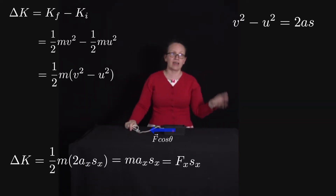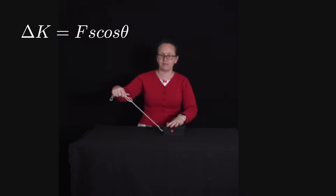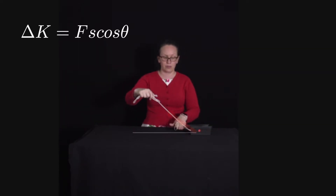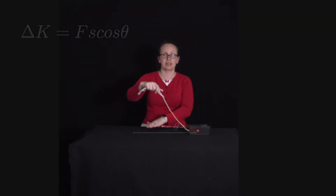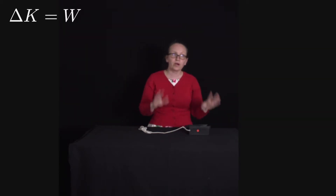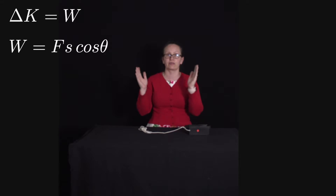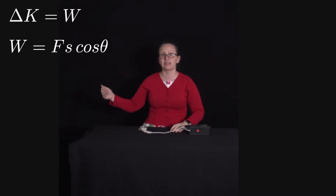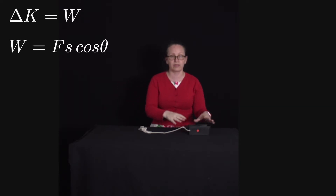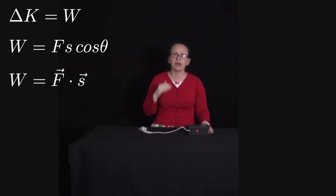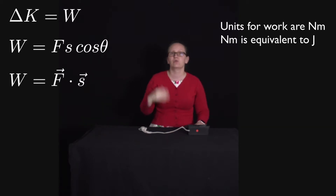F_x equals F cos theta, so the change in kinetic energy equals F times S times cos theta, where S is the total displacement, F is the magnitude of the applied force, and theta is the angle between the displacement and the force. This change in kinetic energy is achieved through work done on the body, so the work done equals F dot S — using the dot product, since for two vectors A and B with angle theta between them, A dot B equals AB cos theta. The units of work are newtons times meters, which is equivalent to joules.